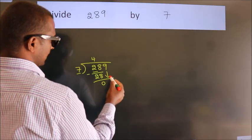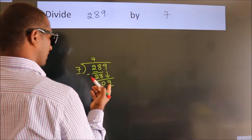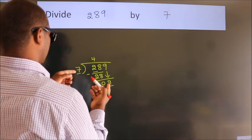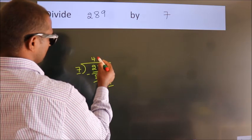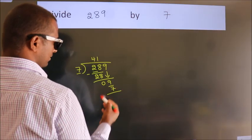After this, bring down the beside number. So bring down 9. A number close to 9 in the 7 table is 7 times 1 equals 7. Now we subtract.